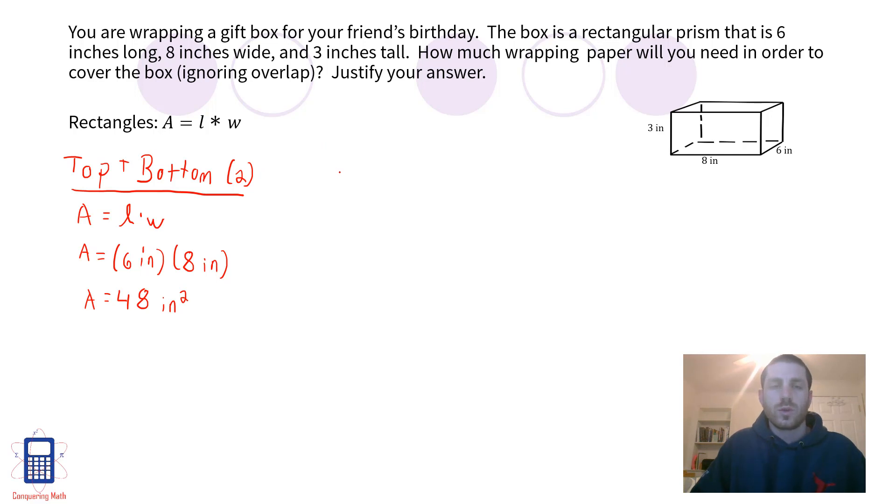So next up we'll do the front and the back, and you can feel free to abbreviate these when you do it. So front and back, again we have area equals length times width. In this case it'll actually be the width and the height of the larger shape, so I'm going to go ahead and just write that this time: width times height.